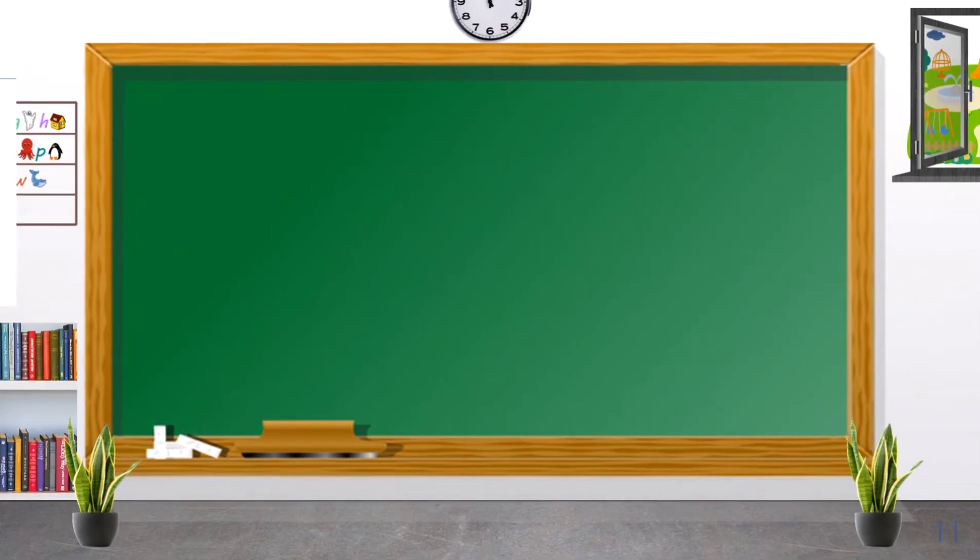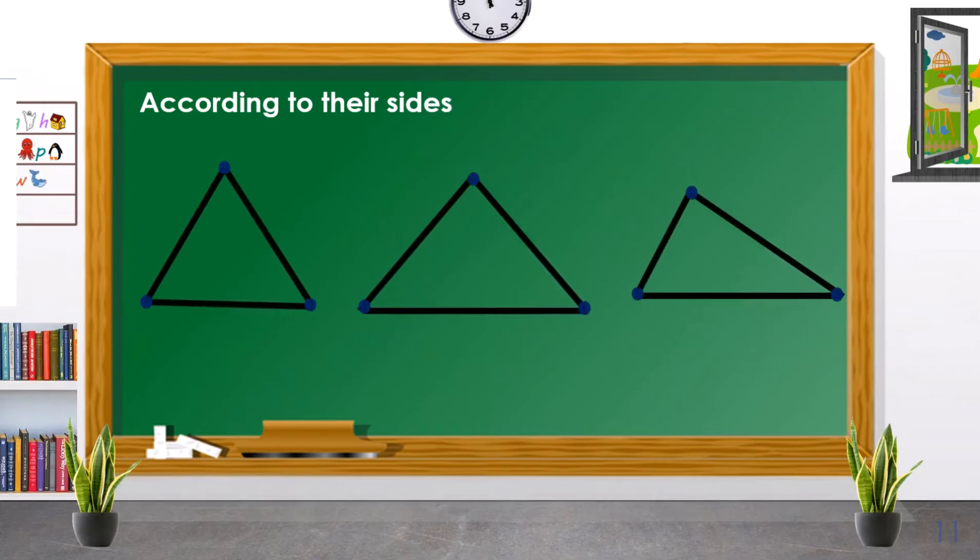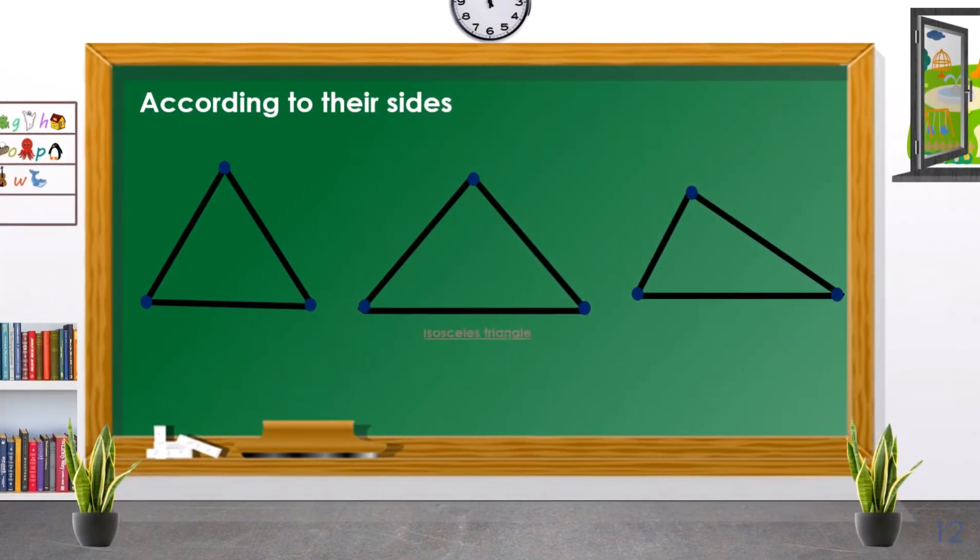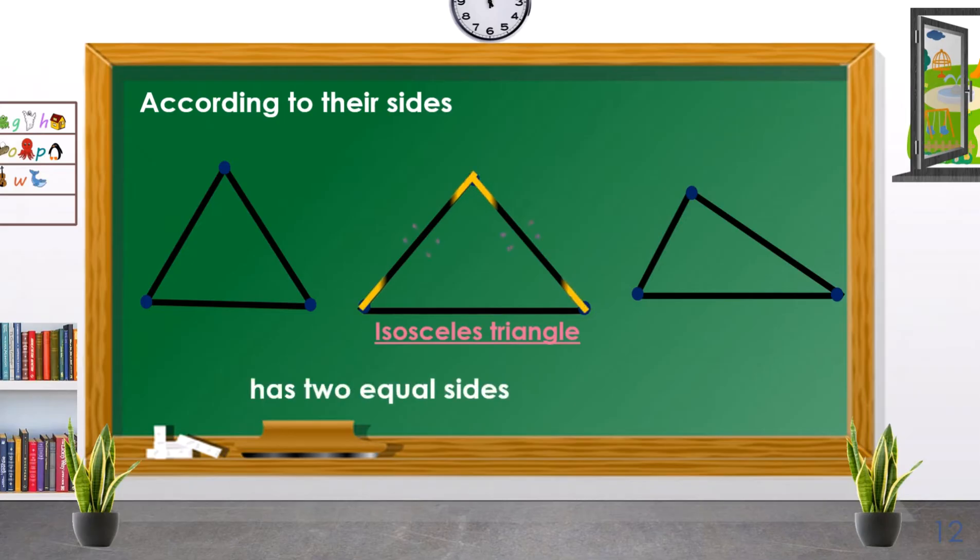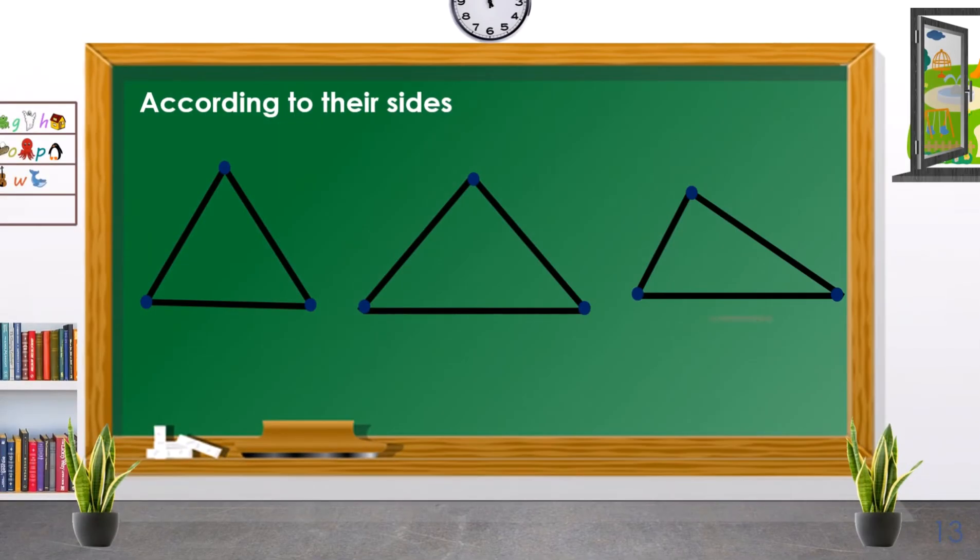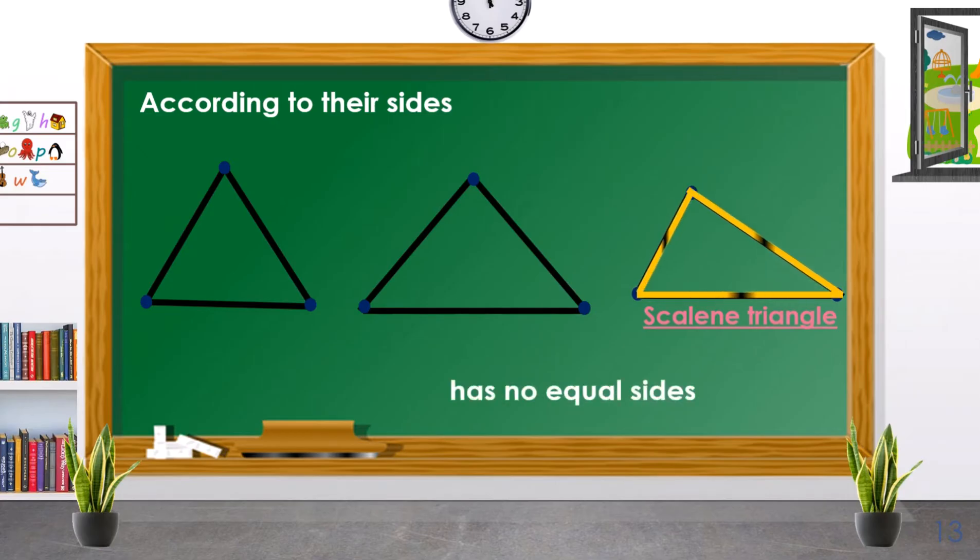The next classification of triangles is according to their sides. The first one is the equilateral triangle. The equilateral triangle has two equal sides. The next type is the scalene triangle. The scalene triangle has no equal sides.